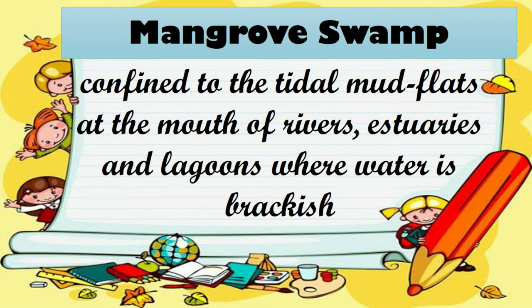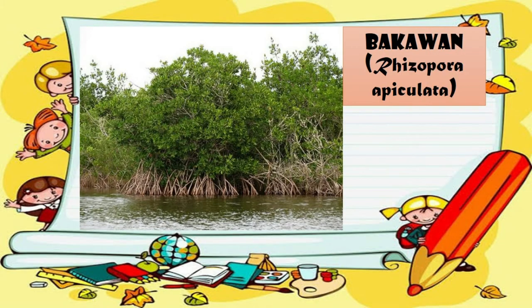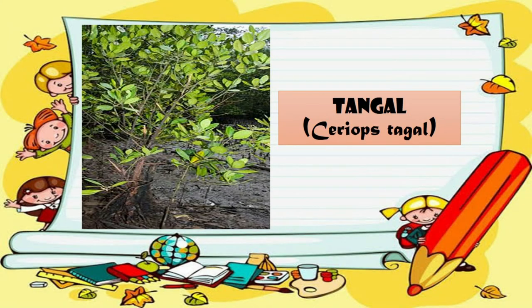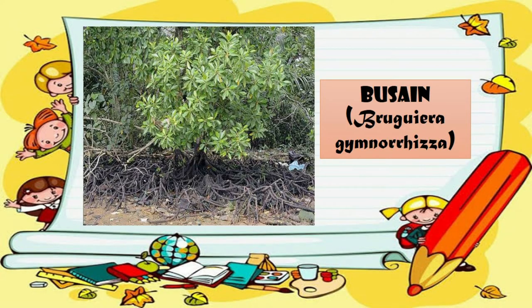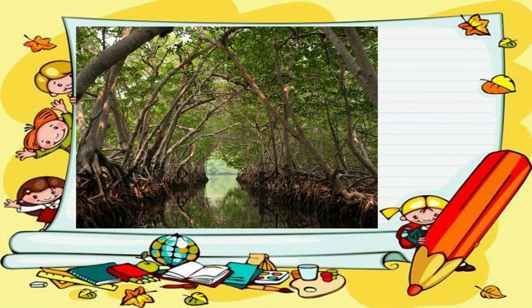Mangrove swamp is confined to the tidal mud flats at the mouth of rivers, estuaries, and lagoons where water is brackish. The dominant plants are Bacawan or Rhizophora apiculata, Tangal or Ceriops tagal, and Musain or Bruguiera gymnorhiza. The swamp is a breeding site for fish and prawn, a nursery for many species of mollusks, and a feeding ground for migratory birds. The water's low salinity enables fish to breed as compared to the sea. Mangroves shelter the open coast and, by trapping drifting sands, prevent suffocation that can result in the death of adjacent coral reefs.